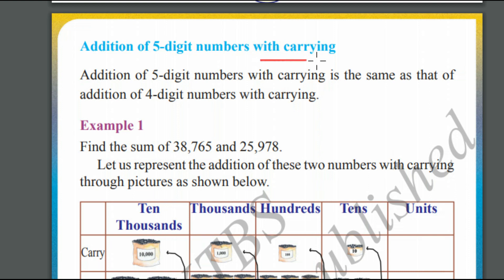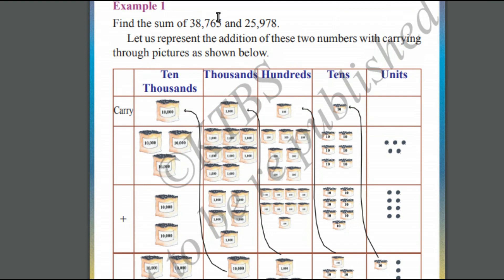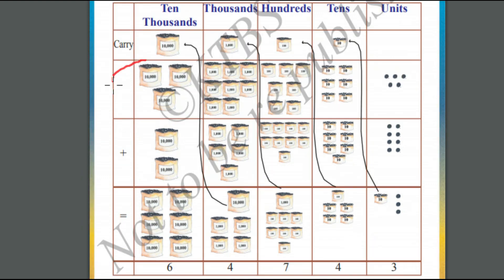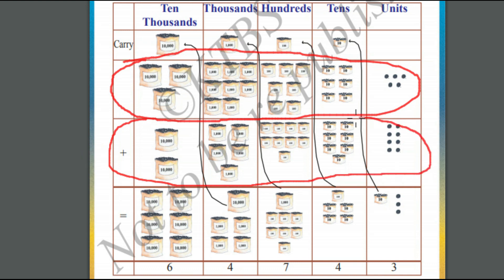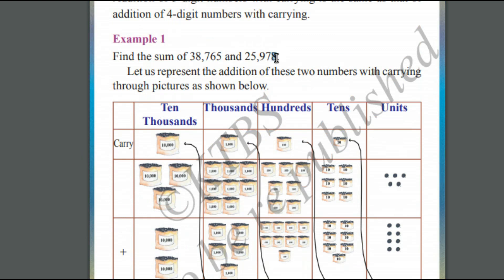Now let us see with carrying — addition of 5-digit numbers with carrying. Look at example one. We need to find the sum of 38,765 and 25,978. We can represent 38,765: in the units place we have got 5 beads, in the tens place we have got 60 beads. Similarly, we follow the same principle for the second number. We have placed the numbers in proper position so that units place of first number matches with units place of second number, tens place with tens place, and so on.